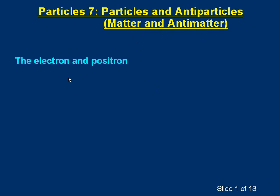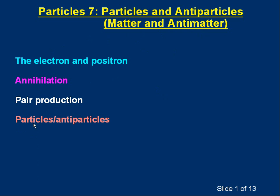Hello, welcome to this lesson on particles and antiparticles, matter and antimatter. We'll start by looking at the electron and a particle called the positron, which is the antiparticle of an electron. We'll talk about a process called annihilation and a process called pair production, then explain more clearly what we mean by particles and antiparticles. There are no calculations in this lesson — it's very fact-based.